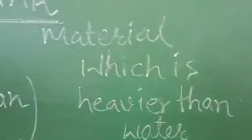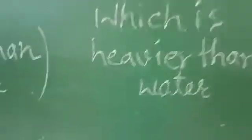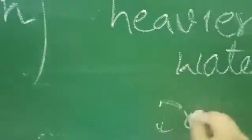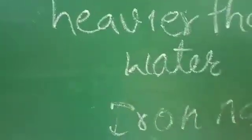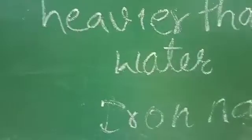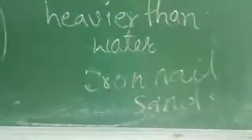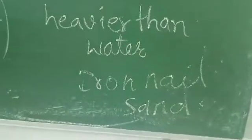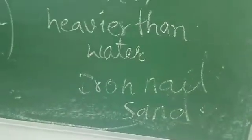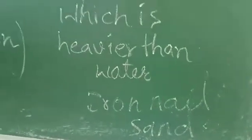Material which is heavier than water sinks in water, like an iron nail and sand. The density of iron nail and sand is higher than water, that is why they sink in water.